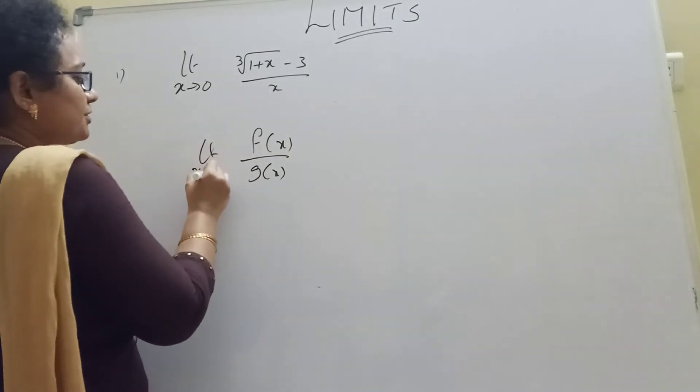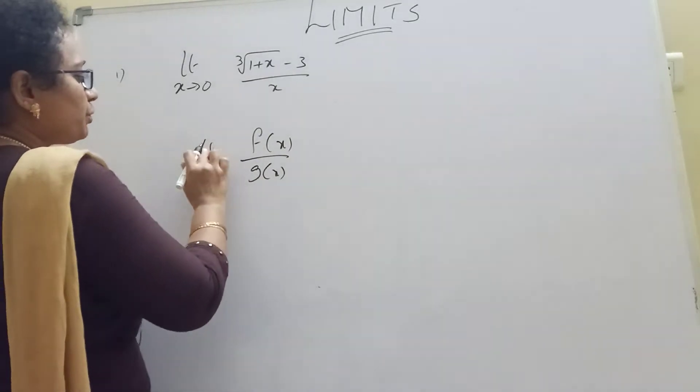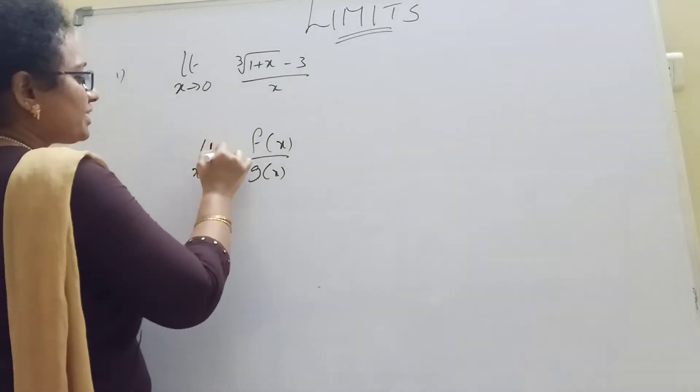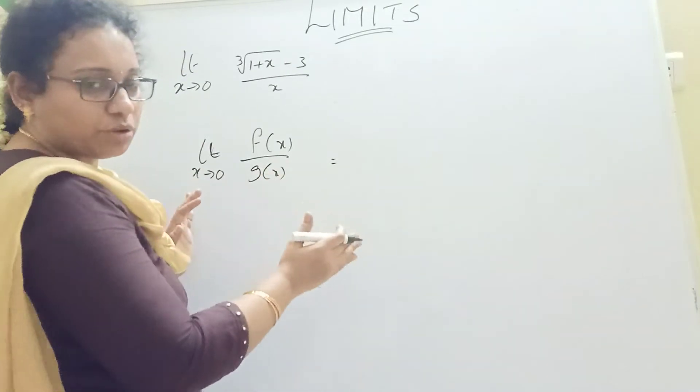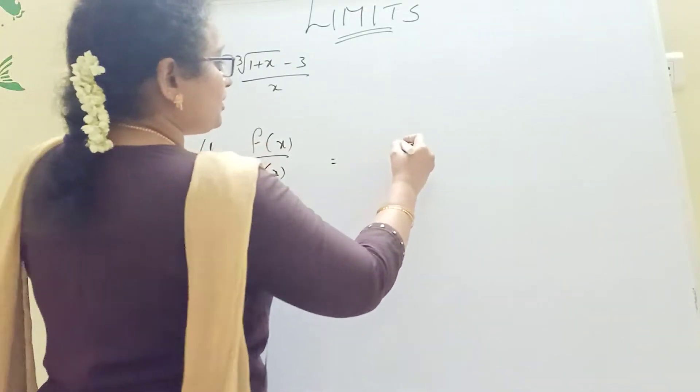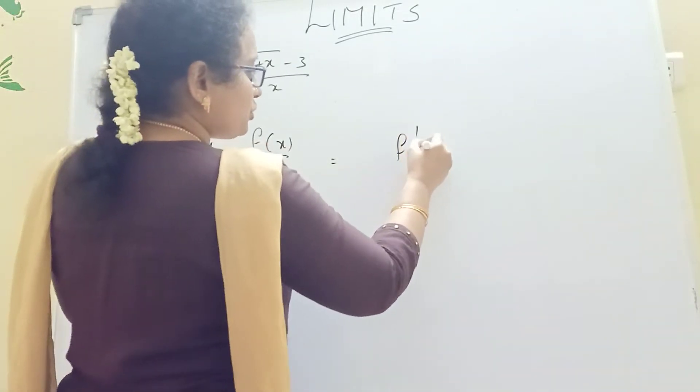Limit x tends to j. The minimum value is a derivative. The minimum value is a derivative of j.